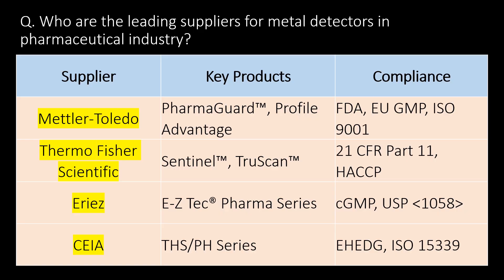Who are the leading suppliers for metal detectors in the pharmaceutical industry? A supplier table lists key products and their compliance certifications. Mettler-Toledo, Thermo Fisher Scientific, Eriez, and CEIA are among the leading suppliers of metal detectors in the pharmaceutical industry.